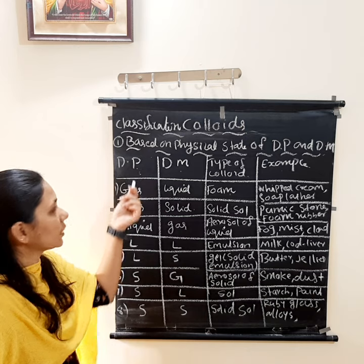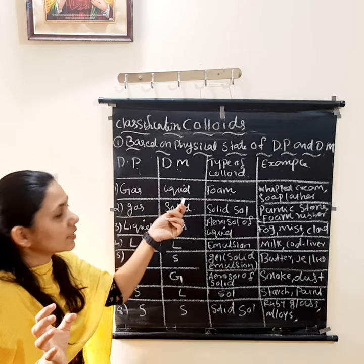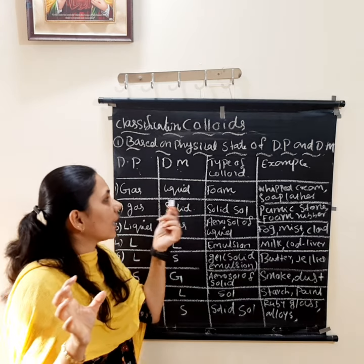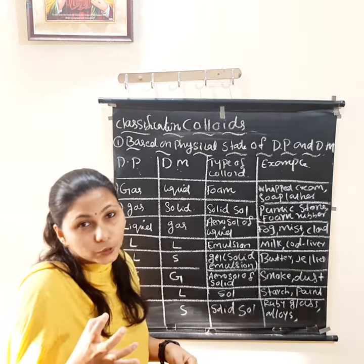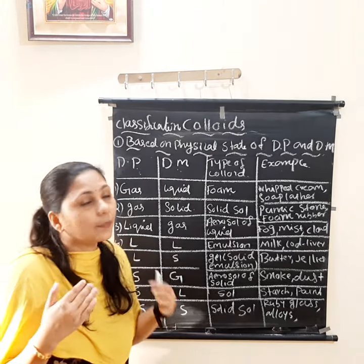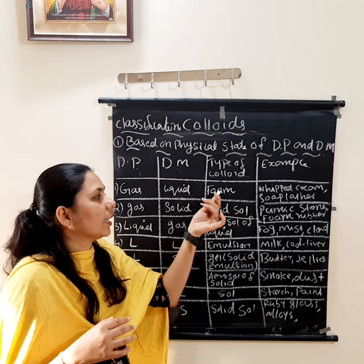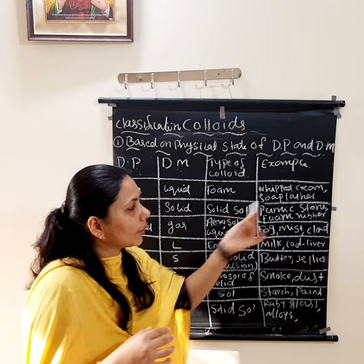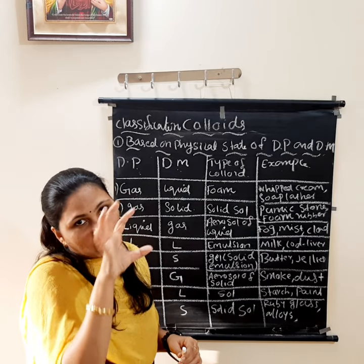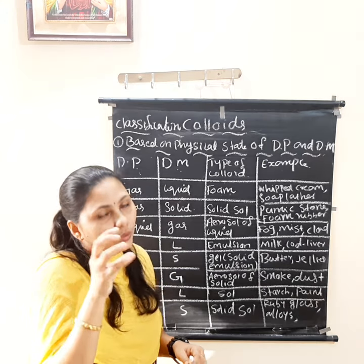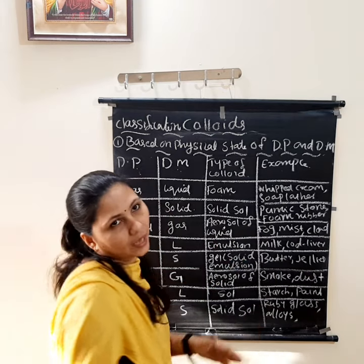Based on the physical state there are eight types of classification. The first type: dispersion phase is gas and dispersion medium is liquid — meaning gas is dissolved in liquid. The name of that colloid is foam. Examples are whipped cream and soap lather. In soap lather, gas is dissolved in liquid, which is why it is called foam.